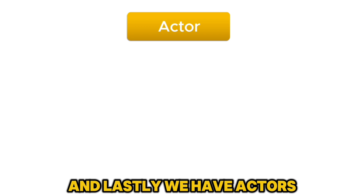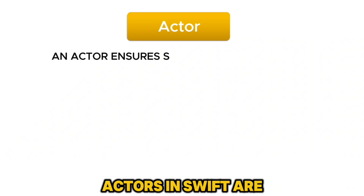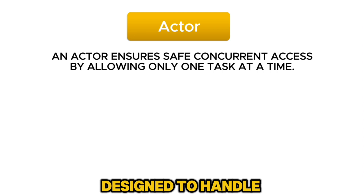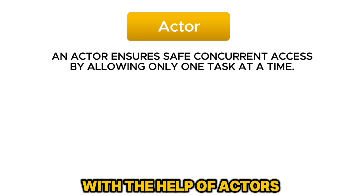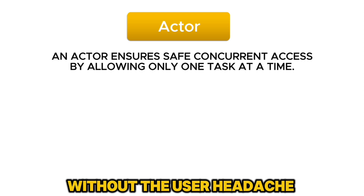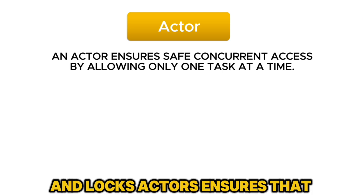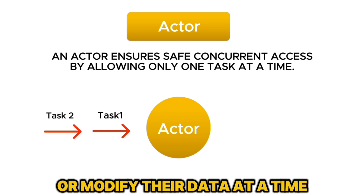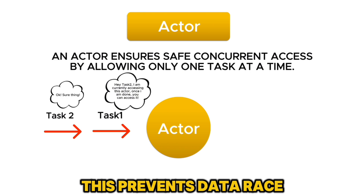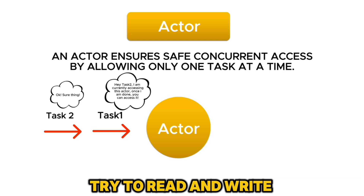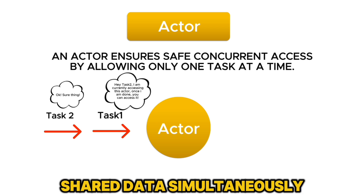And lastly, we have actors. Actors in Swift are like a special kind of class designed to handle concurrency safely. With the help of actors, we can manage shared data without the usual headache of dealing with threads and locks. Actors ensure that only one task can access or modify their data at a time. This prevents data races, which occur when multiple tasks try to read and write shared data simultaneously.